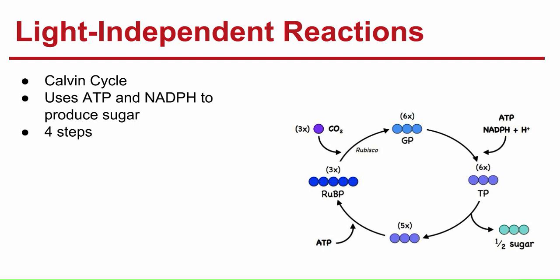The 12 3-carbon molecules are then converted into higher energy forms. Energy comes from ATP and higher energy electrons from NADPH. That means they're on the next energy level.